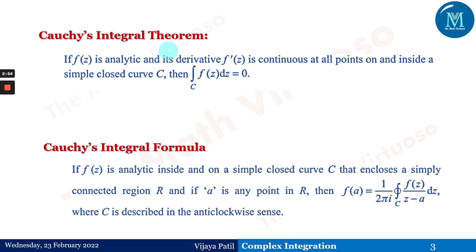Along with the integral theorem, we have Cauchy's integral formula. If f(z) is analytic inside and on a simple closed curve C that encloses a simply connected region R, and if 'a' is any point in R, then f(a) equals 1 upon 2πi times the integration of f(z) upon (z minus a) over the closed curve C dz, where C is described in an anti-clockwise direction.